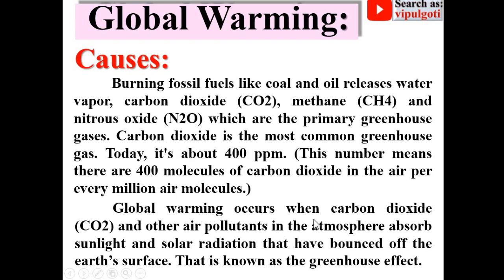Global warming occurs when carbon dioxide (CO2) and other air pollutants in the atmosphere absorb sunlight and solar radiation that have bounced off the earth's surface. That is known as the greenhouse effect.